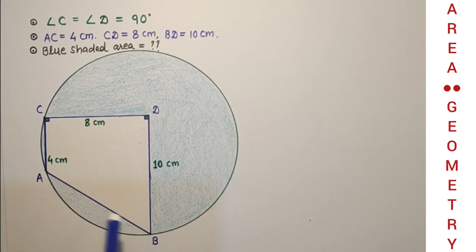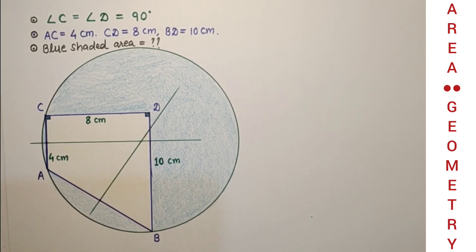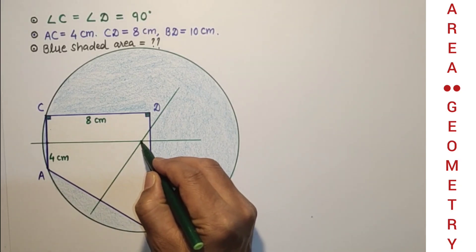So AB and AC are two chords. If we draw perpendicular bisector of these two chords, perpendicular bisector of a chord passes through the center of the circle, so two perpendicular bisectors will confirm the position of the center. Let us draw the perpendicular bisectors of two chords AB and AC. These are perpendicular bisectors intersecting at this point and this is the center.